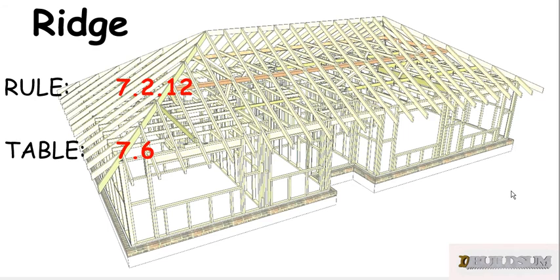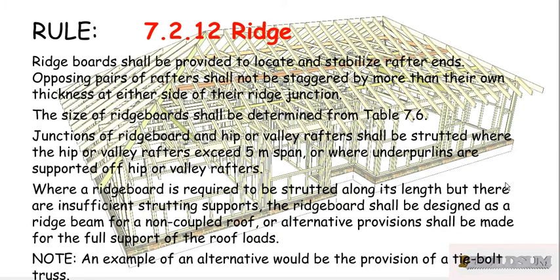There is one rule for the ridge, which is rule 7.2.12, and it refers to table 7.6 which, if you remember from the Collar Tie video, talks about miscellaneous items. Rule 7.2.12 Ridge says that ridge boards shall be provided to locate and stabilize rafter ends. Opposing pairs of rafters shall not be staggered by more than their own thickness on either side of the ridge junction. The size of the ridge board shall be determined from table 7.6.